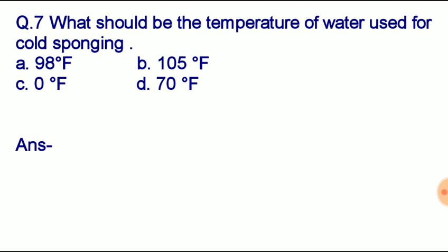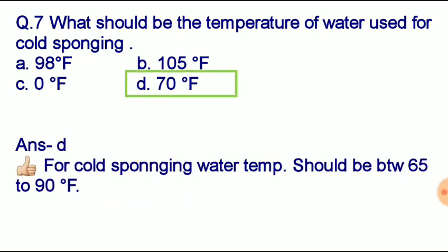Question number seven: what should be the temperature of water used for cold sponging? Option A: 98°F, option B: 105°F, option C: 0°F, option D: 70°F. Correct answer: option D, 70°F. For cold sponging, water temperature should be between 65 to 90 degrees Fahrenheit.